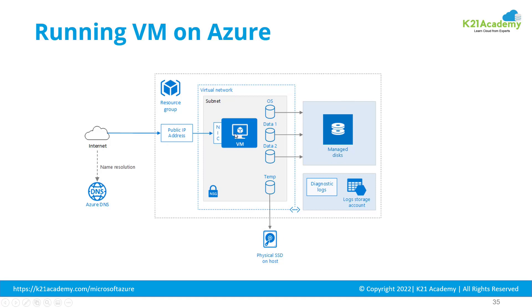In a virtual machine you can configure something called a network interface card, which gives the IP addresses assigned to the virtual machine. You can create multiple network interface cards, and if you create a machine with a public IP you can access it over the internet.